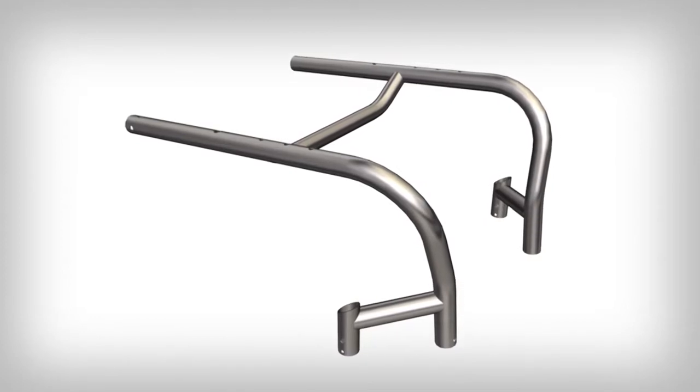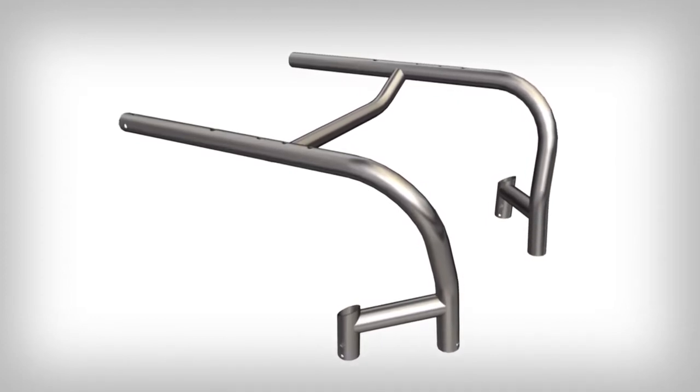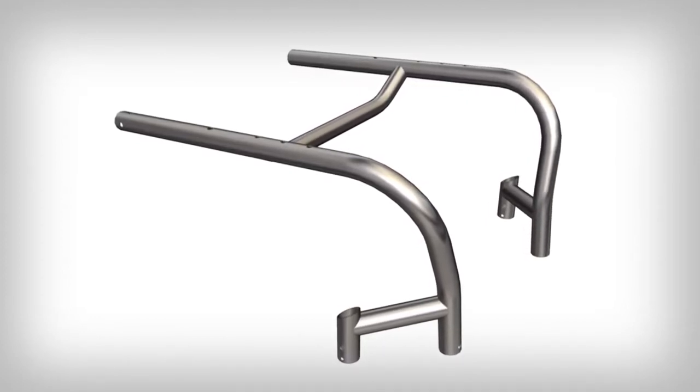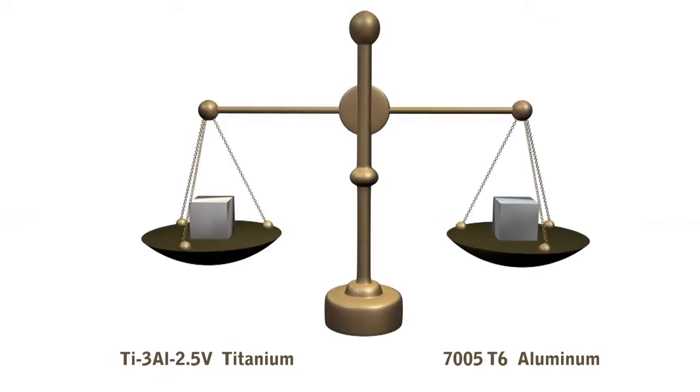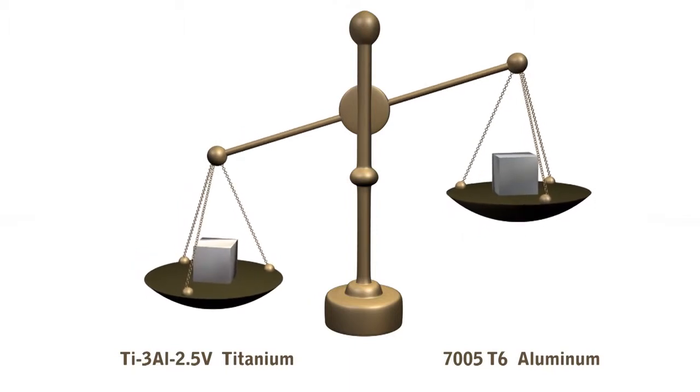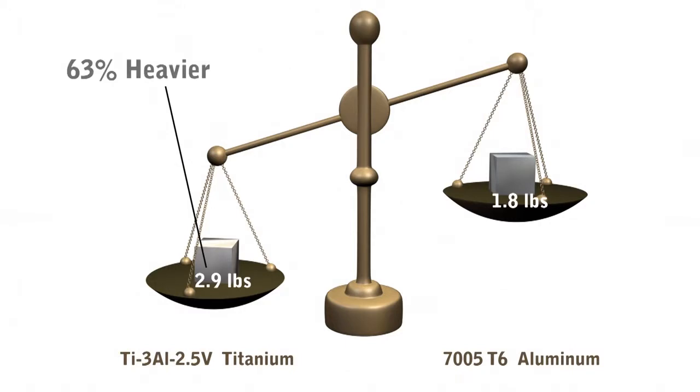How much weight does a titanium frame really save? To understand, let's begin by looking at the difference between a block of titanium alloy commonly used in wheelchair manufacturing and an identical block of commonly used aluminum alloy. Place them on a scale and the titanium sinks like a rock. Why? Because titanium alloy is 63% heavier than aluminum alloy.